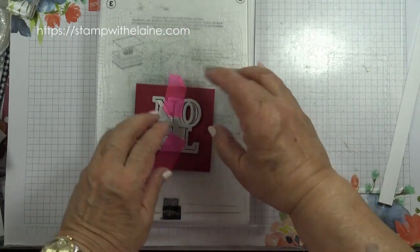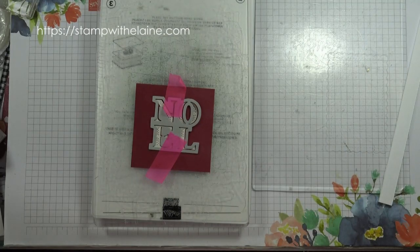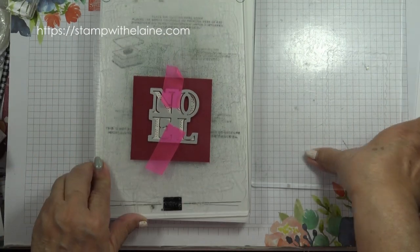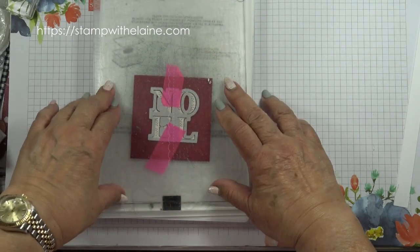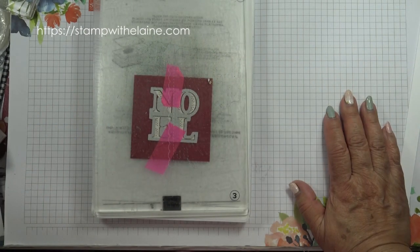Put tape over it so that it doesn't move, and then place your top cutting plate, the second platform three on top, and then you're ready to run it through the machine.